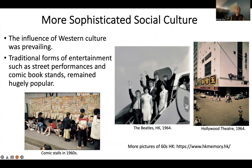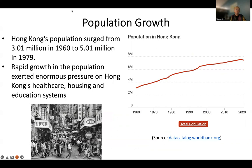The most important factor is population growth. Hong Kong's population surged from 3 million in 1960 to 5 million in 1979 — a growth of 2 million in just 20 years. This rapid population growth exerted huge pressure on Hong Kong's healthcare, housing, and education systems.